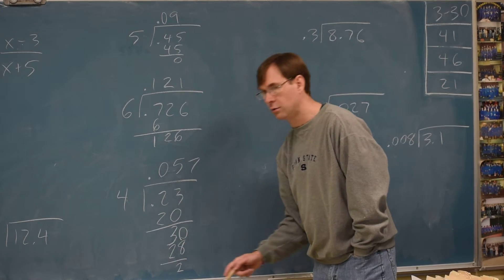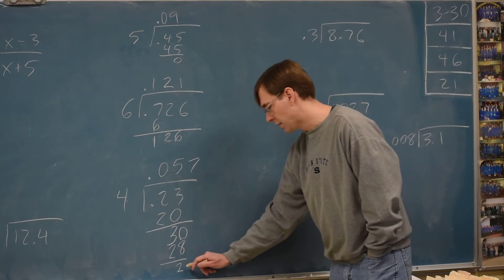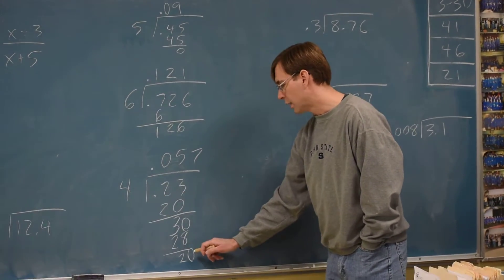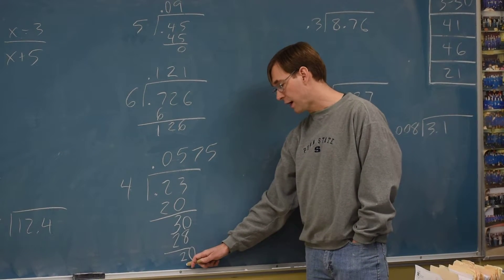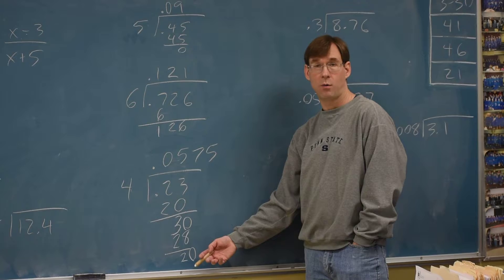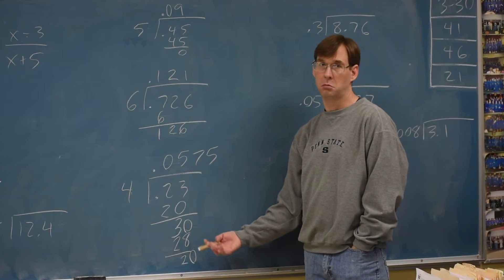You have to add a zero to the problem and keep going. So the three becomes the thirty. And go again. Four into thirty is seven. Four times seven is twenty-eight. Gets me a temporary two. But I'm not done. So I need to go another zero. Four into twenty is five. Perfectly. So now we're done.